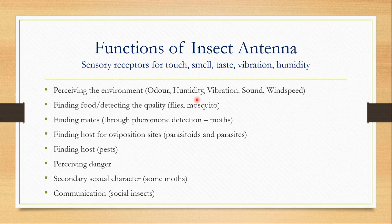Antennae also help in finding food or detecting the quality of the food in many insects, for example in flies or mosquitoes. Many insects find their mates with the help of their antennae. For example, the female moths release some pheromones which are perceived by the male moths with their very elaborate antennae.